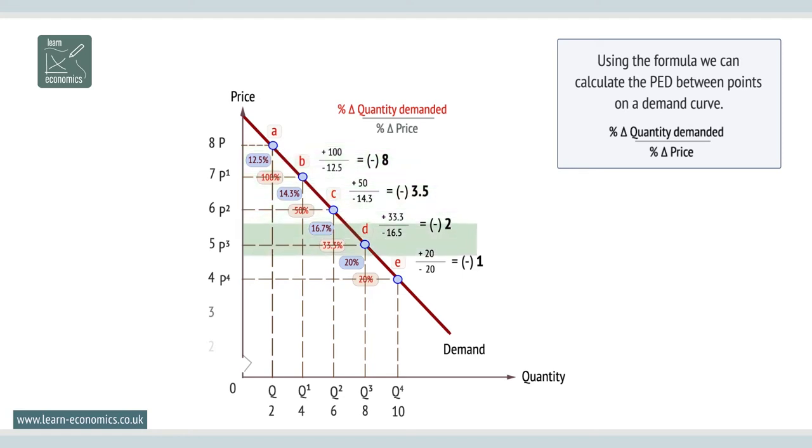PED falls in value as we move down the demand curve from left to right. At the midpoint of the demand curve, PED equals 1 and is called unit PED.